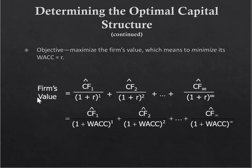Any financial asset — a firm, preferred stock, a bond, common stock, a real estate investment, a project — is valued the same way. It's the same concept in finance over and over again. If you're still having challenges with time value of money, go back to Chapter 4. If you're having challenges with valuation of stocks and bonds, review those chapters, because it's the same concepts — we just change stock to firm, firm to project, and it's the same approach.